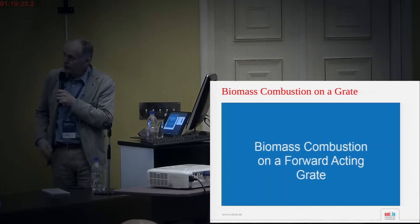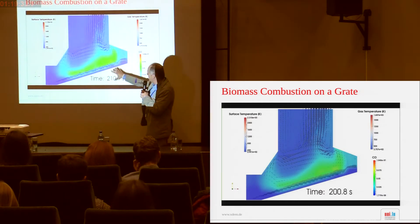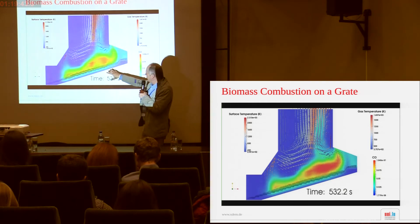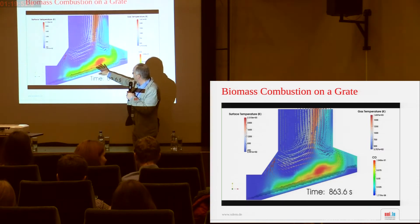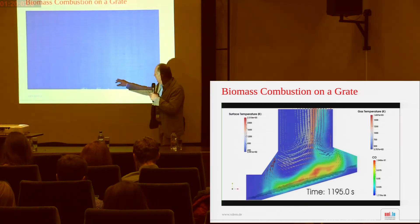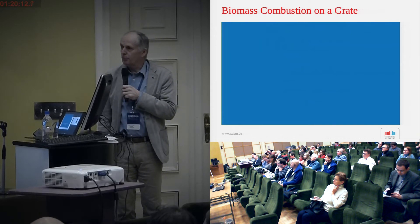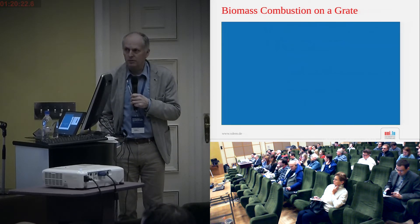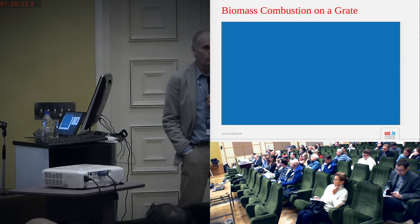The biomass combustion on the forward-acting grate shows particles moving over the grate with low-frequency fluctuations — similar to what you observe in a natural wood fire — caused by the changing porosity in space and time of the moving packed bed. The CO emissions from pyrolysis of the particles follow the flow distribution as well. We can use relevant simulation times for such an application using only about 10 cores, with a ratio of about 1:10 to 1:15 between real time and computation time.